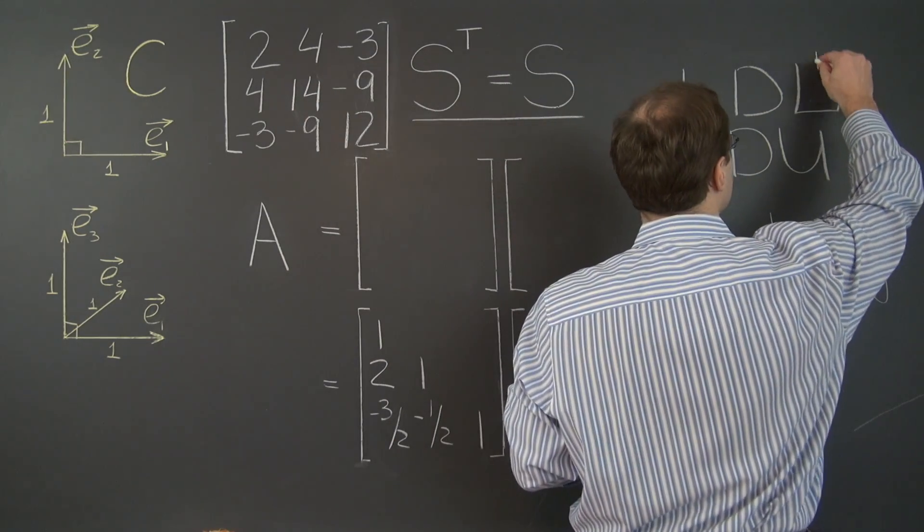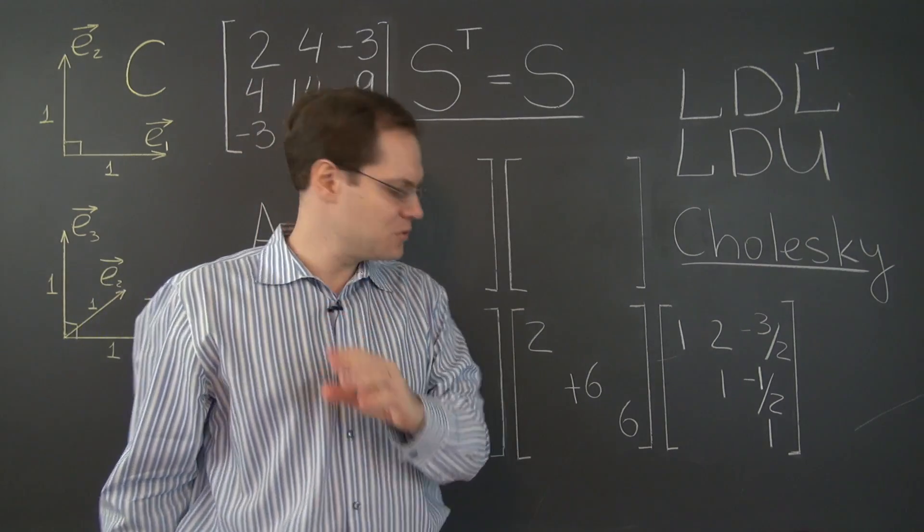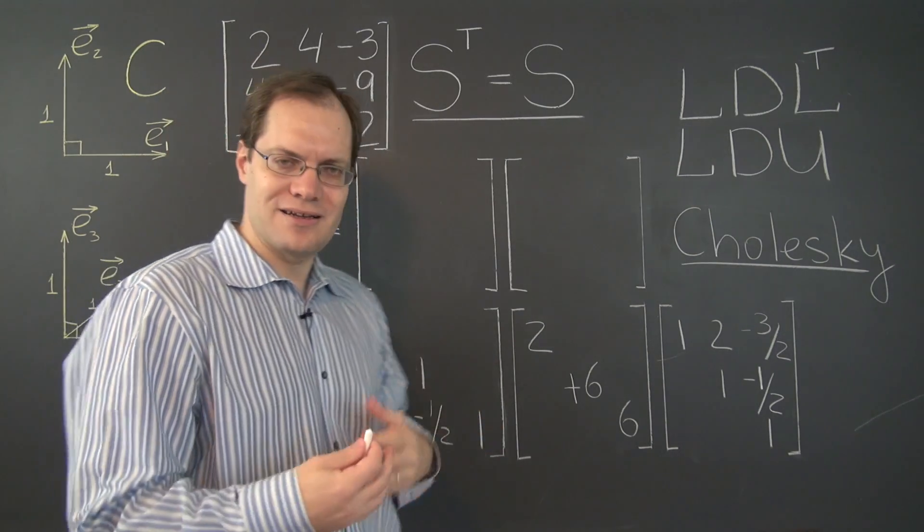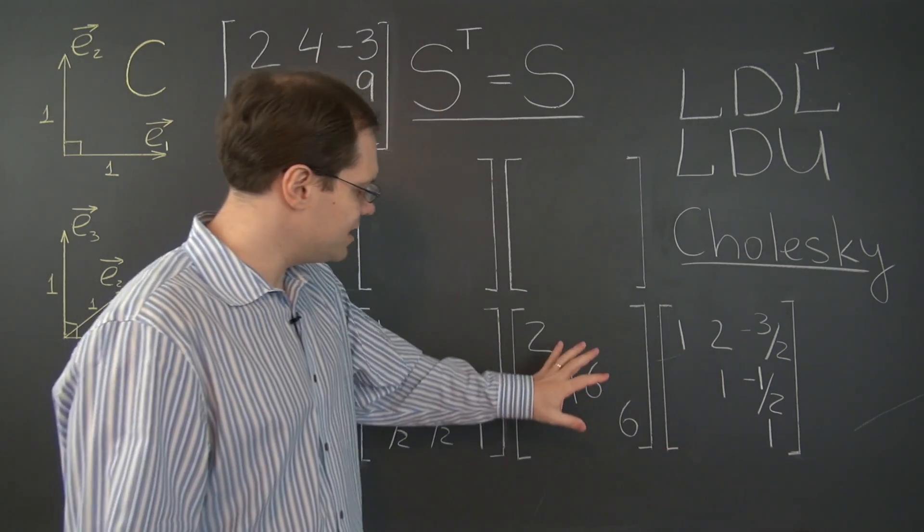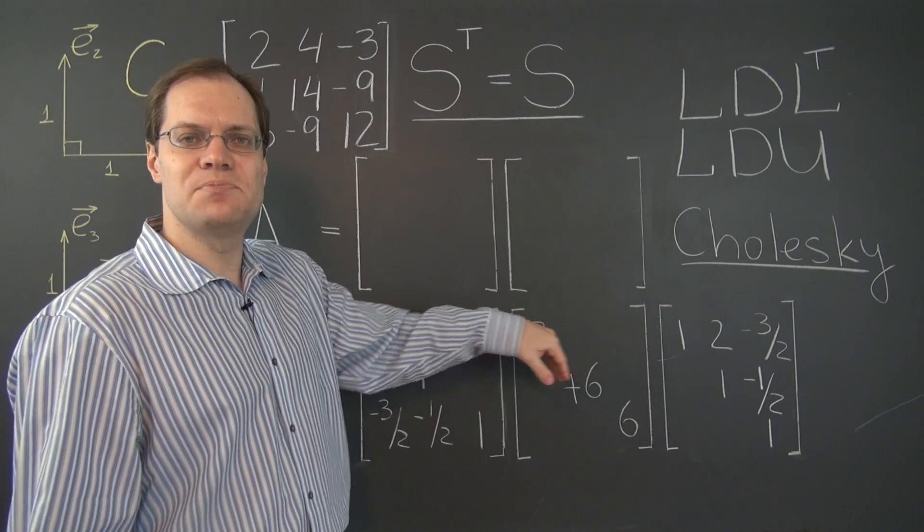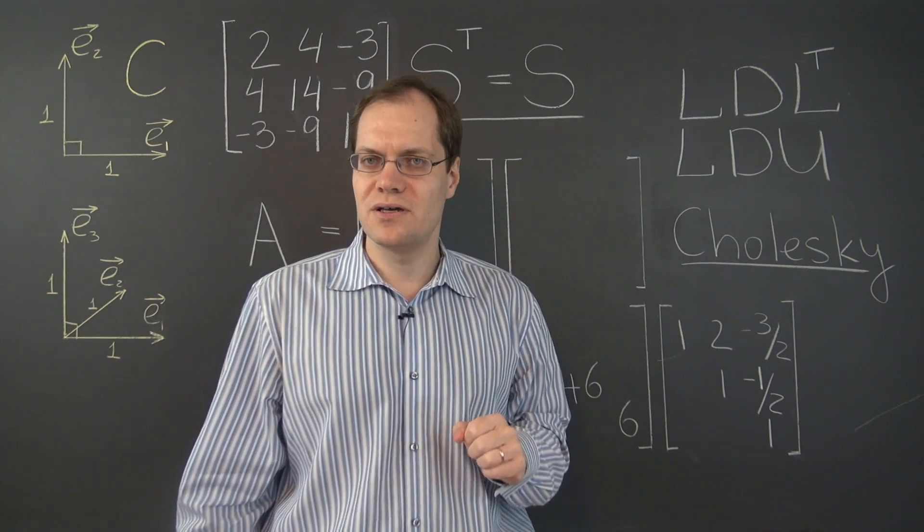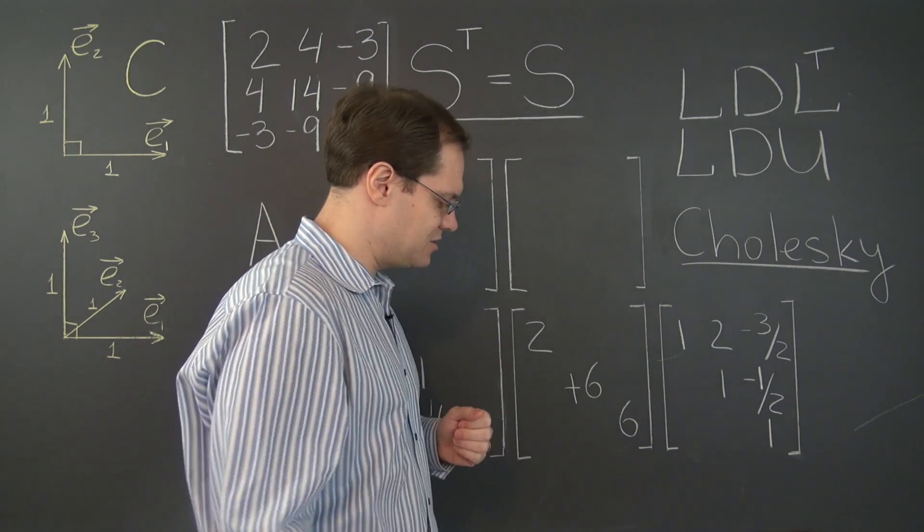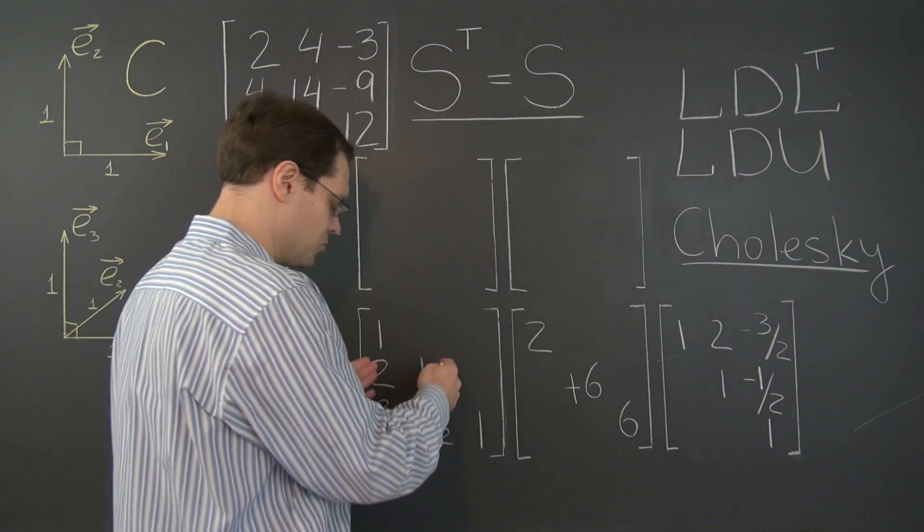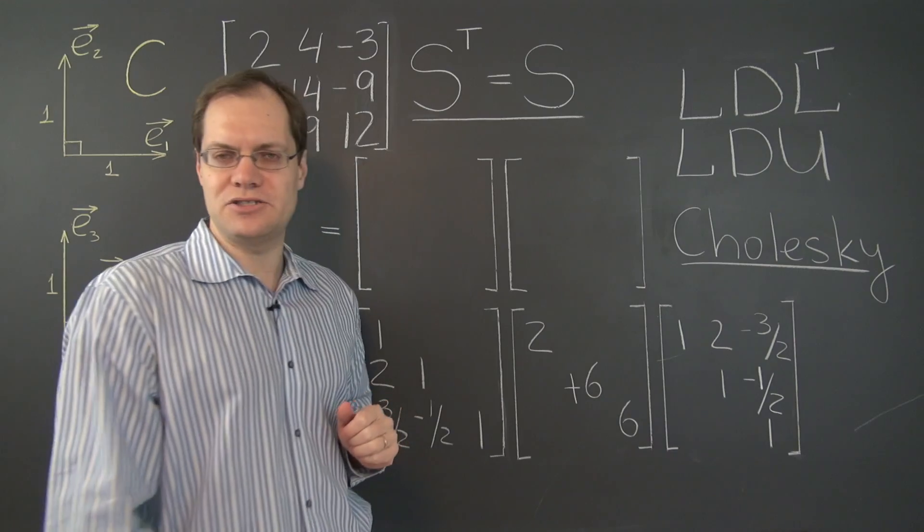Oh, I must have erased it between the videos. L, D, L transpose. Here's what we're going to do now. We're going to make it simpler in a way. Instead of having three matrices, we'll have two. We'll take the matrix D and split it evenly between L and L transpose. And how we're going to do it? We're going to take the square root of this matrix, essentially, and take one square root and combine it with this matrix, and the other square root and combine it with this matrix.